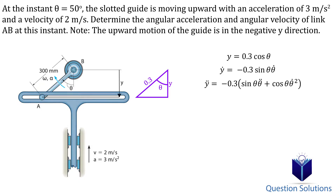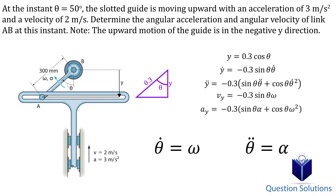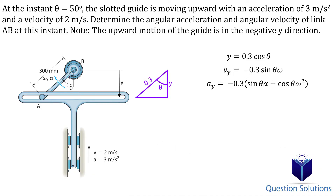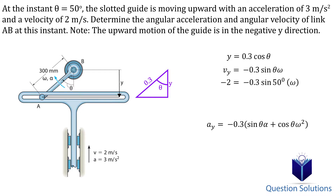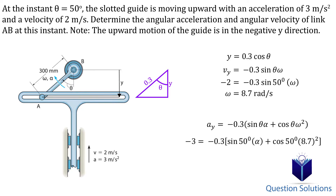Remember that θ̇ is angular velocity and θ̈ is angular acceleration. Now we're ready to plug values in, starting with the velocity equation. The velocity is negative 2 meters per second and the angle is 50 degrees — it's negative because the upward motion of the guide is in the negative y direction. Solving gives us the angular velocity. Next, for angular acceleration, the acceleration is negative 3 meters per second squared. Don't forget to plug in the angular velocity we just found. Solving gives us the angular acceleration — those are our answers.